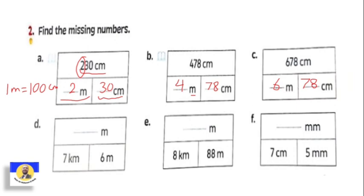Letter d: we have kilometers and meters and want to combine into meters. One kilometer equals one thousand meters. So seven kilometers becomes seven thousand — the seven goes to the thousands place. We have six in the ones place. The hundreds and tens become zero zero. Letter e: eight kilometers and eighty-eight meters — eight goes to thousands, eighty-eight fills tens and ones, and hundreds is zero.